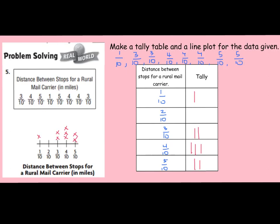This is what your line plot should look like. Again, this way you can answer many different questions. For example, what's the difference between the farthest distance and the shortest distance? You can use 5/10, which is a half a mile, minus 1/10. The difference would be 4/10 of a mile. I hope you did well on that one and your answers matched mine.